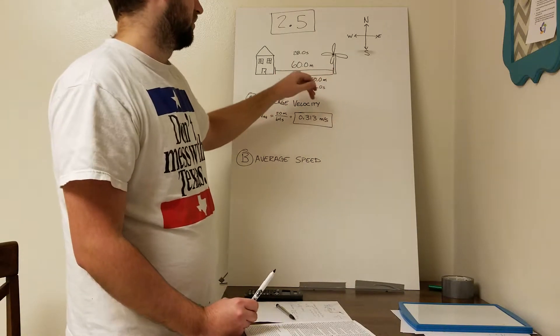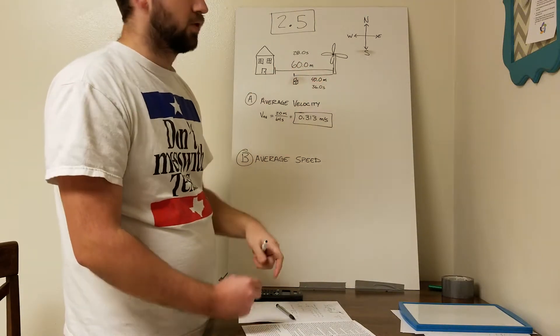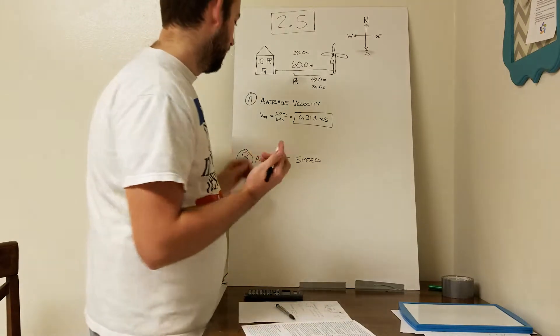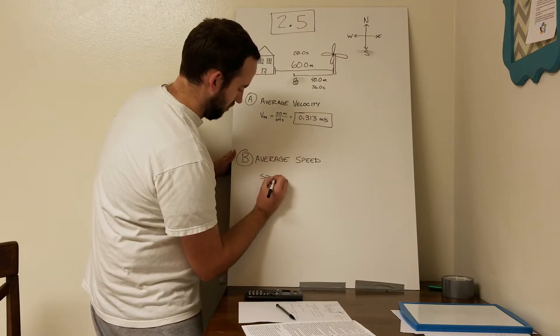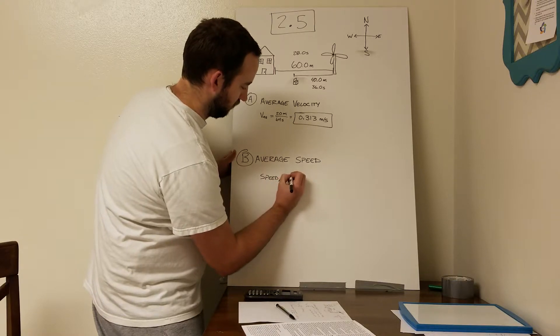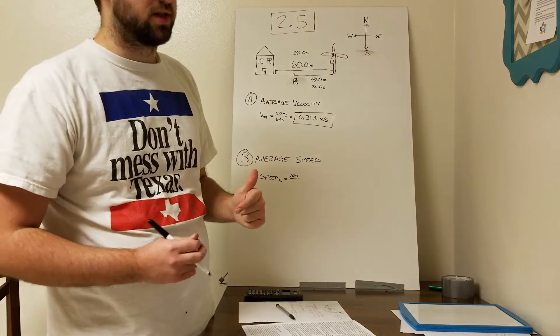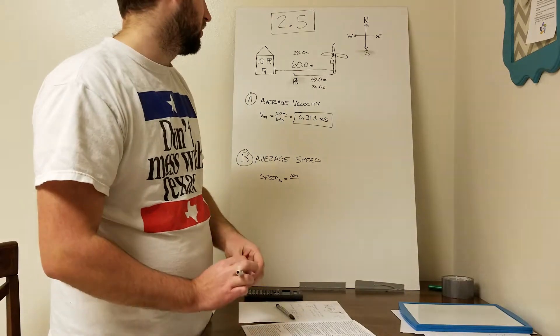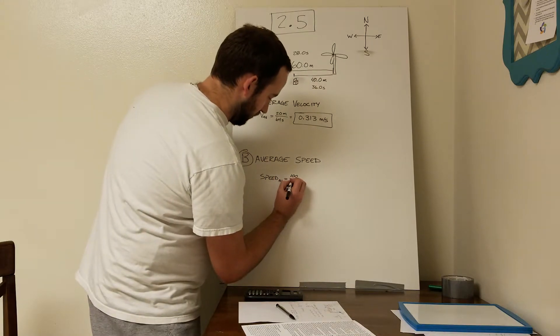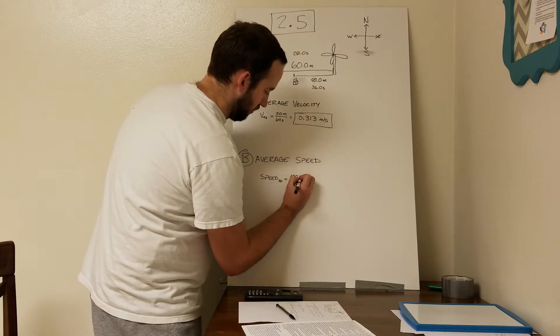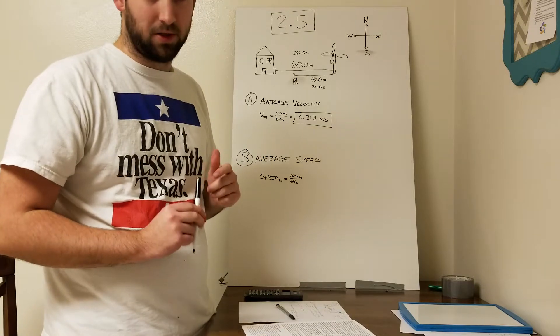What we do with this one is instead of finding that displacement, we add up the two distances that this person traveled. The first was 60, second was 40. We add that together, we end up with 100. So I'll just say speed average equals 100 over the change in time, and we know from part A that change in time was 64 seconds. When we simplify that, we end up with 1.563 meters per second.